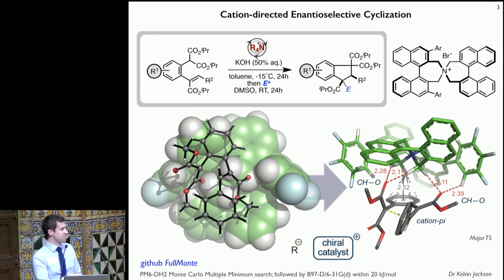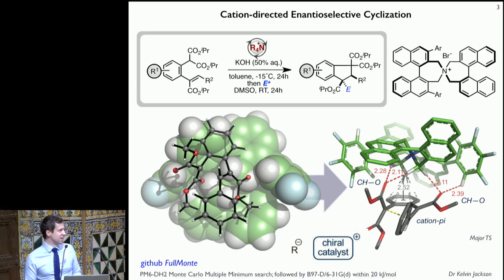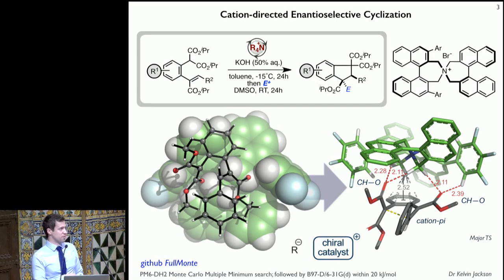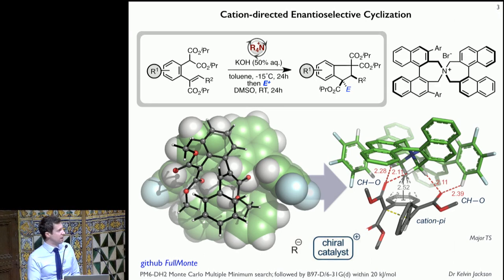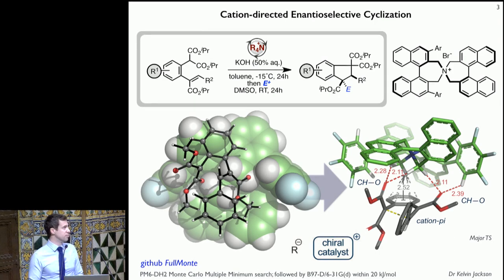Now we'd probably use D3H4 corrections and look into Stefan Grimme's new tight-binding methods, but we interface this with MOPAC and it's very fast. All structures within an energy window of 20 kJ/mol are re-optimized at a slightly higher level of theory. The logic of using B97D is that even with Gaussian we can use density fitting and get some speedup. We do this to generate an ensemble of transition structures.